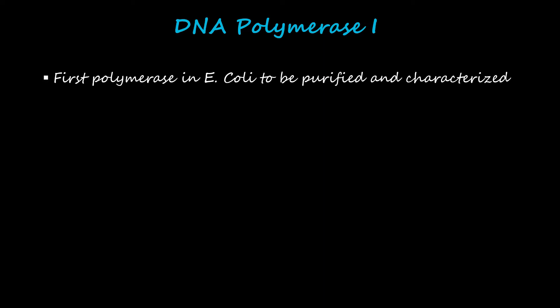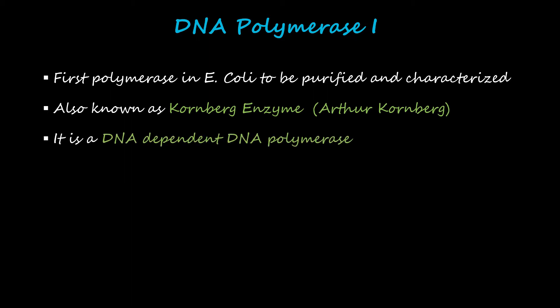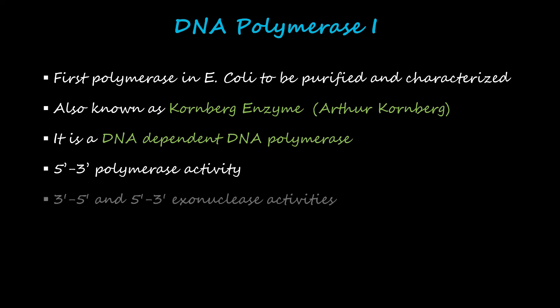In gene manipulation there are different types of DNA polymerases that are being used, and some of them are discussed here. First of all, DNA Polymerase I — it is the first polymerase in E. coli which was purified and characterized. It is also known as the Kornberg enzyme because it was discovered by Arthur Kornberg. It is a DNA-dependent DNA polymerase because it uses DNA as its template. It has 5' to 3' polymerase activity as well as